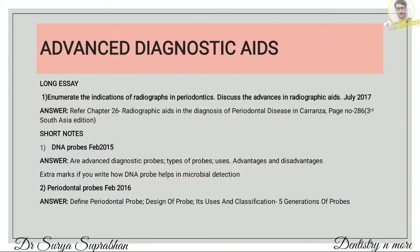Coming to the next chapter — advanced diagnostic aids. Long essay: enumerate the indications of radiographs in periodontics and discuss the advances in radiographic aids. For this, refer chapter 26, radiographic aids in the diagnosis of periodontal disease in Carranza. Indications of radiographs include: helps in diagnosis of periodontal disease, determination of prognosis, evaluation of outcome of treatment, detection of periapical lesions, and assessment of vertical height of alveolar bone for placement of implants.